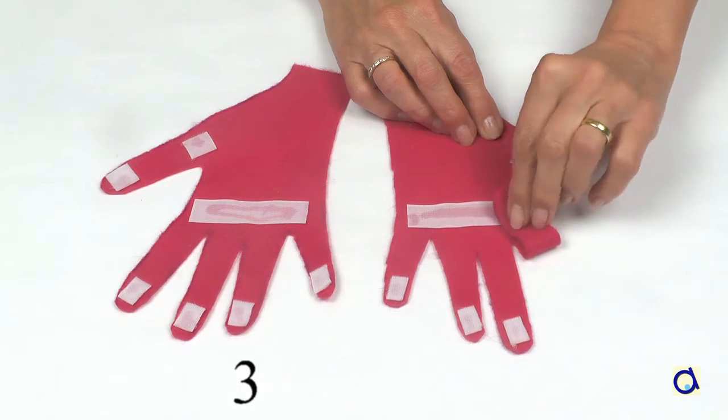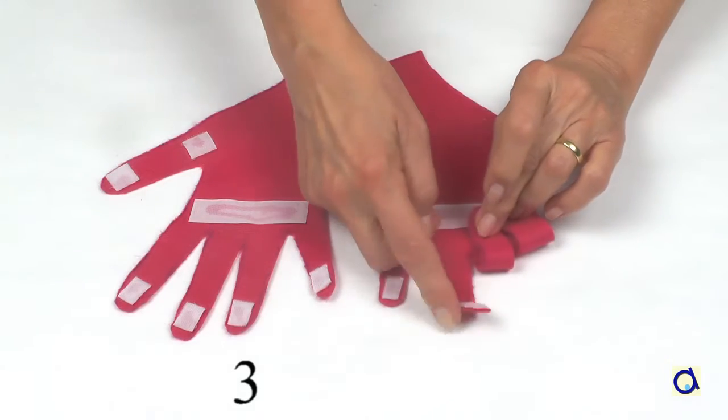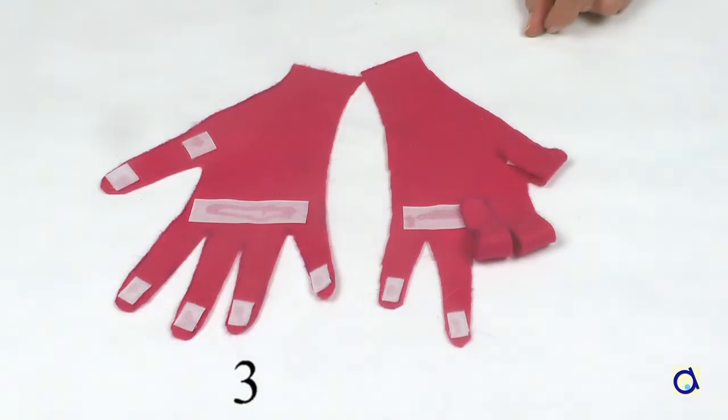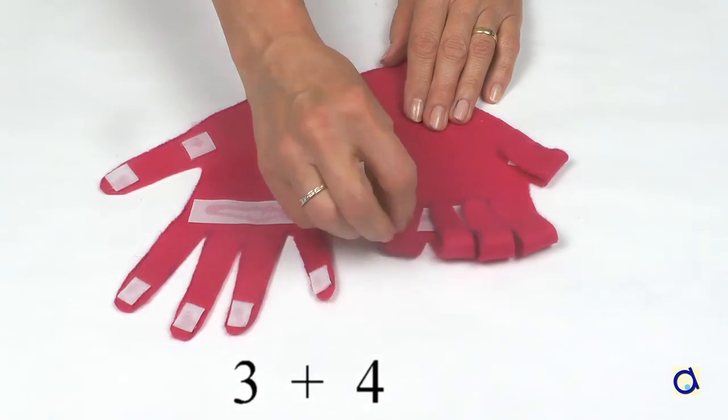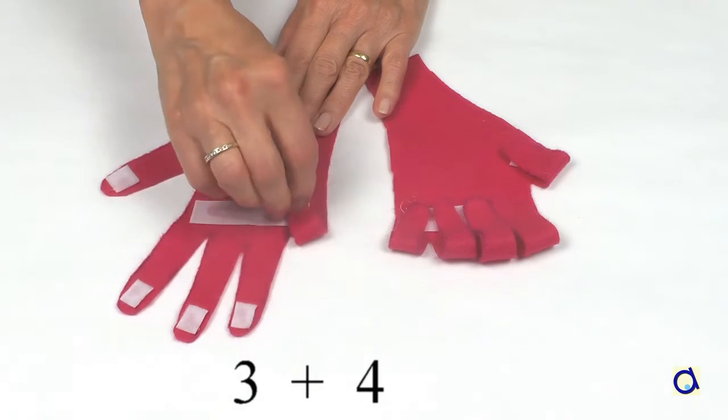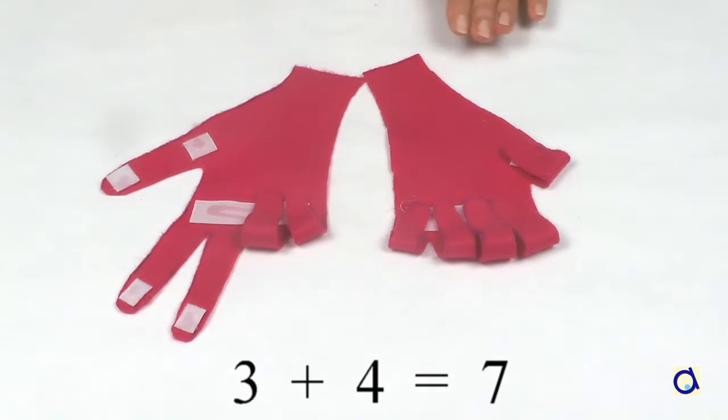In order to make an addition such as 3 plus 4, start by folding 3 fingers and then fold 4 more. The child can then count how many fingers are folded to have the total, 7 in this case.